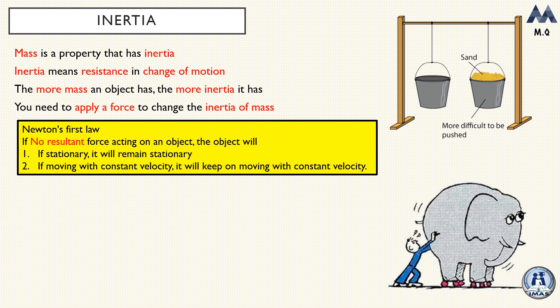Newton's first law is actually called the law of inertia. It talks about objects that do not experience a force. Those objects, if stationary, want to remain stationary, and if they are moving with constant velocity they will keep moving with the same constant velocity — because they have this property called inertia. They resist any change of motion unless you apply a force.